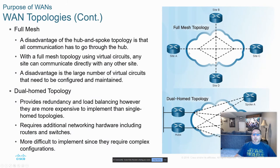Full mesh means every site is connected to every other. Traditionally, when doing this with physical connections, it was very cost-prohibitive. Using virtual circuits and virtualization, it's very doable at a fraction of the cost. The same thing goes for redundancy, like you see here in the dual-homed topology.